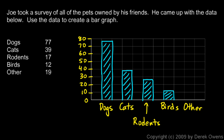And then for other, there are 19 other pets. 19 is just a little bit less than 20, so this needs to come up to just a little bit beneath the 20 mark. And that represents the other pets.